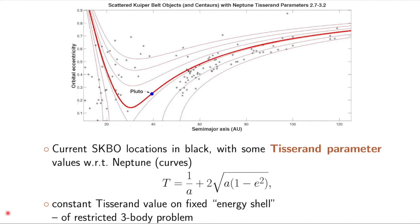These Tisserand parameters correspond to energy levels of the restricted three-body problem for the object in the field of the Sun and Neptune.